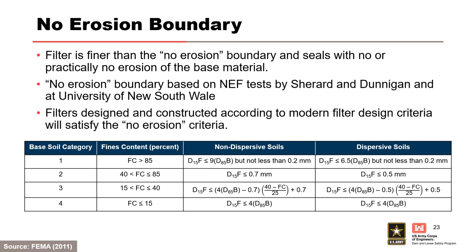The no erosion filter design criteria for dispersive soils is more stringent, as shown at the right of the table. If a filter fails the no erosion screening, then evaluate the other erosion boundaries using Foster and Fell 2001 to assess how much erosion is required for self-filtering to occur and whether it can be tolerated.